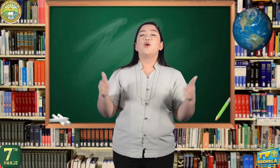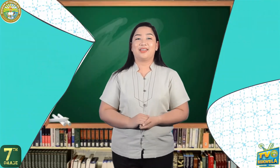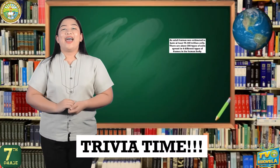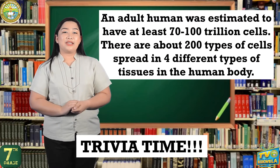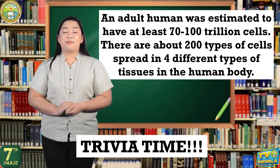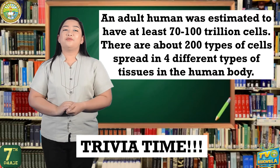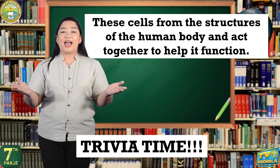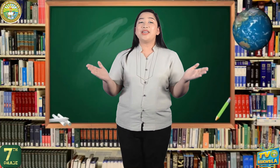We have two types of multicellular organisms, and for this lesson, we will enter the cellular level of the animal and plant kingdom. The cell is the smallest basic structural and functional unit of an organism. Trivia time! An adult human was estimated to have at least 70 to 100 trillion cells. There are about 200 types of cells spread in four different types of tissues in the human body. These cells form the structures of the human body and act together to help it function. It is truly amazing that all these trillions of cells came from a single cell and now make up our body. Isn't it amazing?